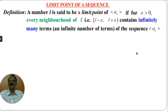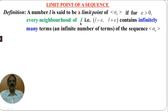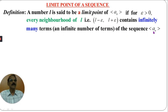What is a limit point of a sequence? A real number L is said to be a limit point of the sequence AN if for epsilon greater than 0, every neighborhood of L — that is, the open interval (L minus epsilon, L plus epsilon) — contains infinitely many terms of the sequence.